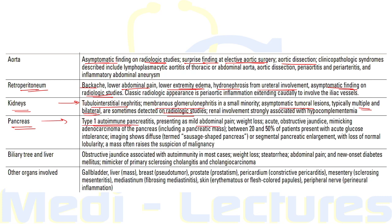Type 1 AIP presents as mild abdominal pain, weight loss, and acute obstructive jaundice, which can mimic adenocarcinoma of the pancreas. Between 20 and 50 percent of patients also present with acute glucose alterations due to endocrine pancreas involvement. Biliary tree and liver involvement presents with obstructive jaundice, weight loss, steatorrhea, abdominal pain, and new-onset diabetes mellitus — it can mimic primary sclerosing cholangitis and cholangiocarcinoma. Other rarely involved organs include gallbladder, liver, breast, prostate, pericardium, mesentery, mediastinum, skin, and peripheral nerves.